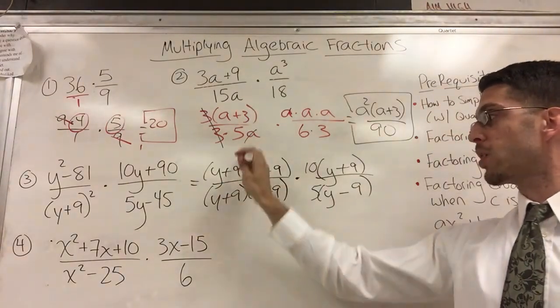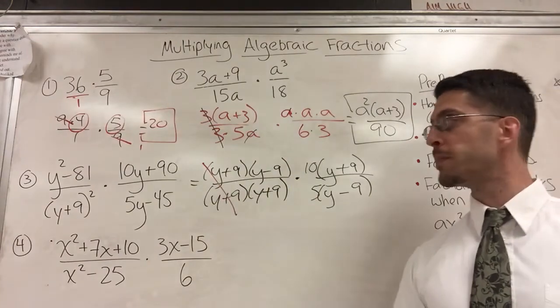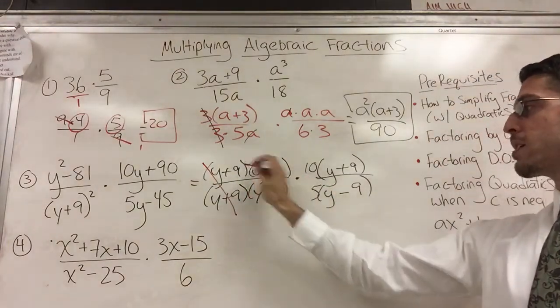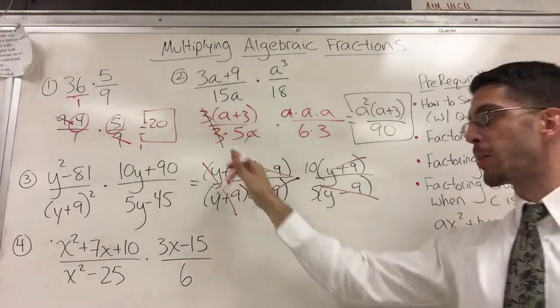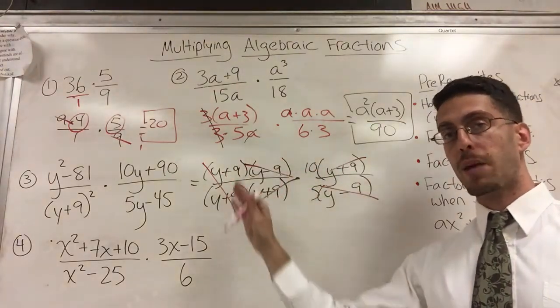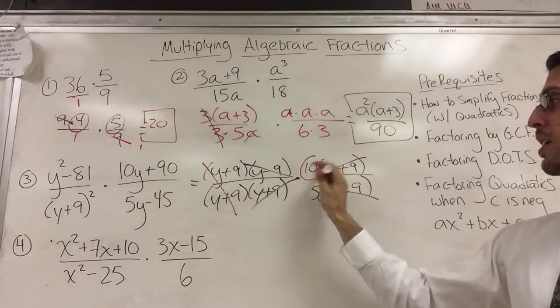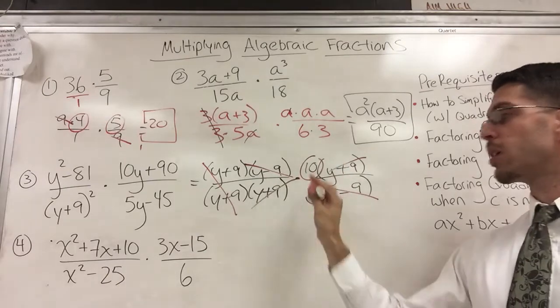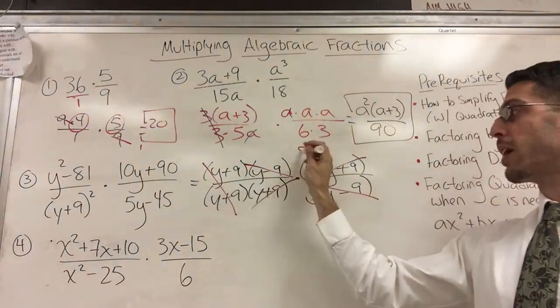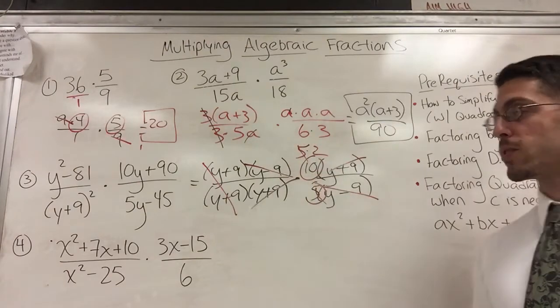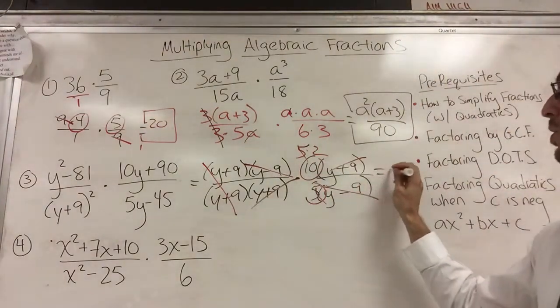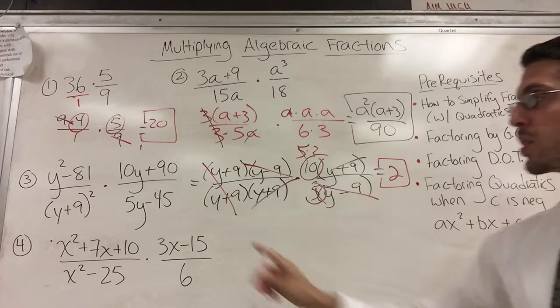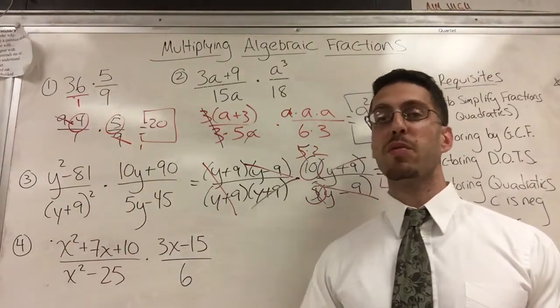I see a Y plus 9 over a Y plus 9. Goodbye. Y minus 9, Y minus 9. Goodbye. Y plus 9, Y plus 9. Goodbye. So, I'm cross-canceling and I'm canceling top and bottom. And what's left? 10 over 5. I can even rewrite the 10 as 5 times 2. And then the 5s cancel. But you already know that 10 over 5 is 2. So, your final answer is 2.